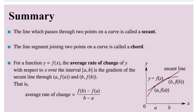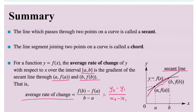Summary: the line passing through two points on a curve is called a secant. The line segment joining two points on a curve is called a chord. For a function y equals f(x), the average rate of change of y with respect to x over the interval [a, b] is the gradient of the secant line through the coordinates (a, f(a)) and (b, f(b)) — that is, f(b) minus f(a) over b minus a.